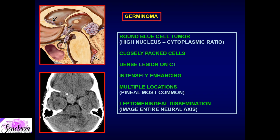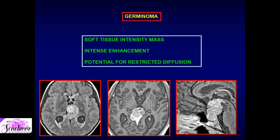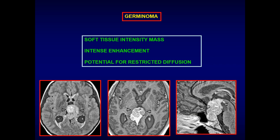On non-contrast CT, it is a hyperdense lobulated mass — this one sitting in the suprasellar or inferior third ventricular region. On MRI, it is an intensely enhancing mass. Two separate tumor examples are shown: one in the suprasellar third ventricular area, another in the pineal gland region. This is a lobulated soft tissue neoplasm in the CSF region, and like choroid plexus carcinoma and medulloblastoma, we must image the entire neural axis.